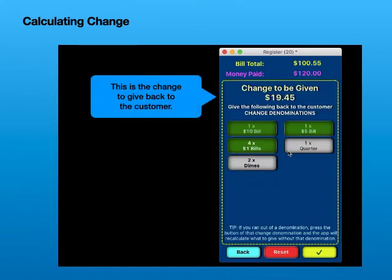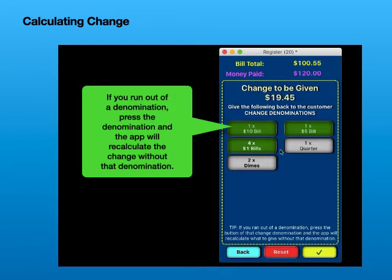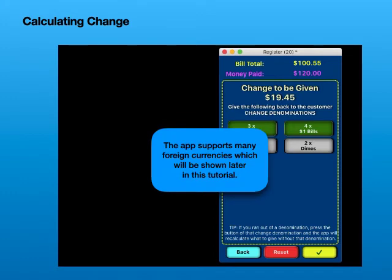This is the change to give back to the customer. These are the denominations to give back to the customer. If you run out of a denomination, press the denomination and the app will recalculate the change without that denomination. The app supports many foreign currencies, which will be shown later in this tutorial.